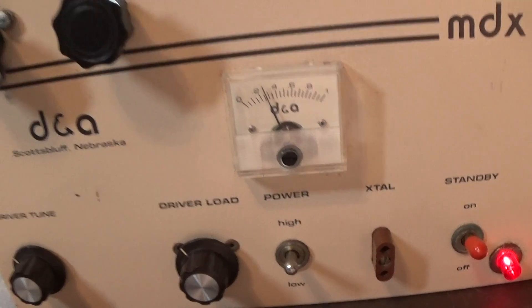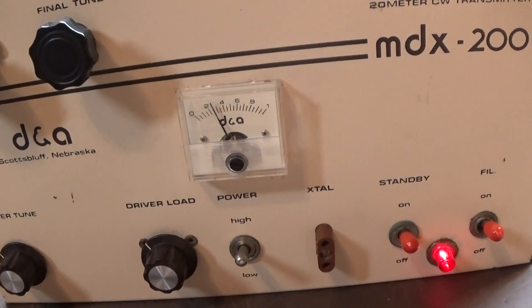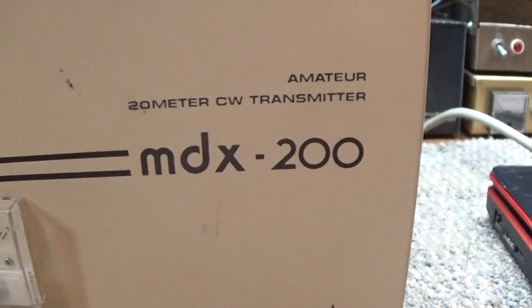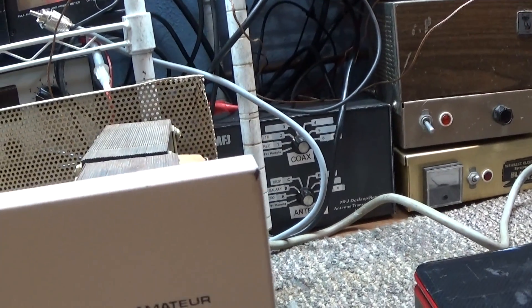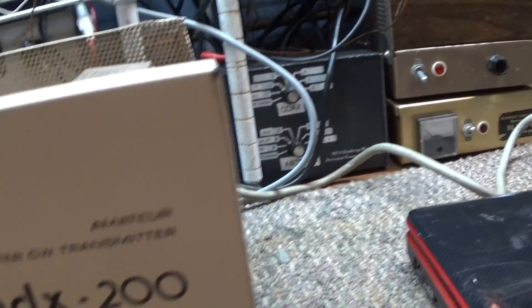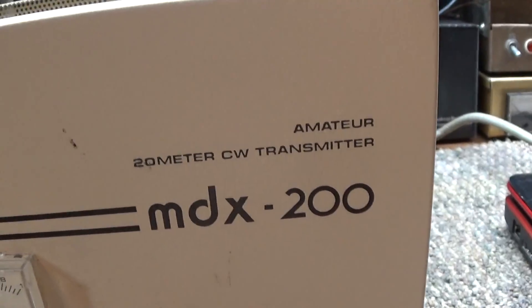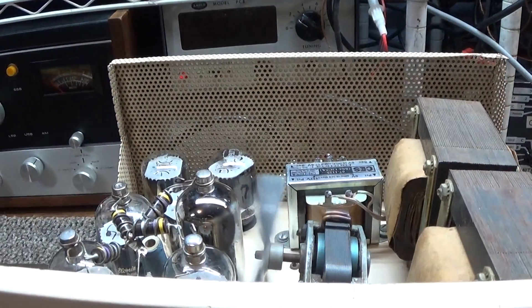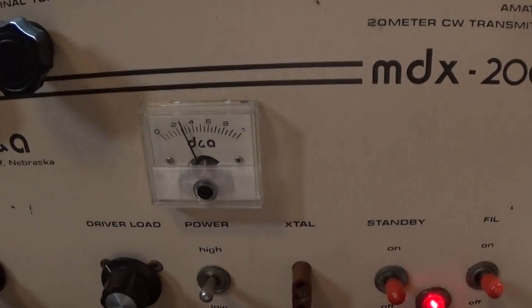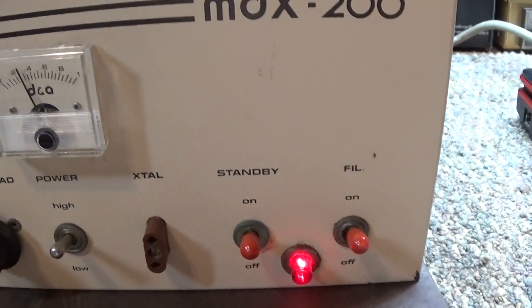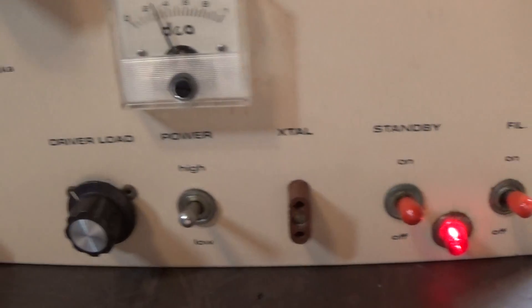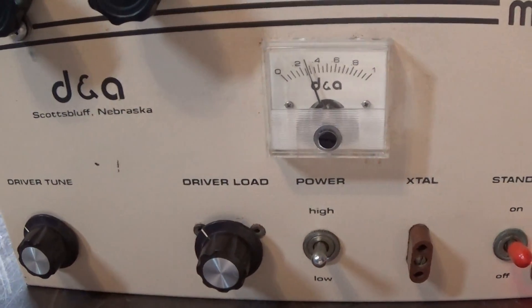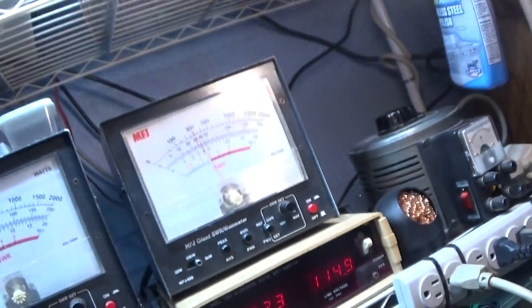That's it, running smooth, running clean. MDX 200, again the later version of the Maverick 250, which it has one less driver tube than the Maverick 250 does. Other than that, it's pretty much just a rebranded Maverick 250 called a transmitter to get past the good old FCC back in the day.